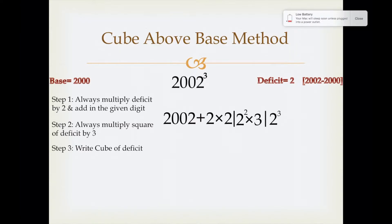Now we are going to solve this equation. 2002 plus 4 will make 2006, write 2006. In the second step, it'll come 12, write 12. And in the last step, it'll give 8.